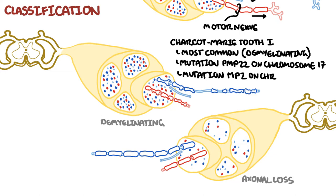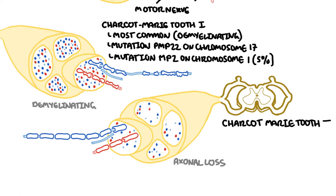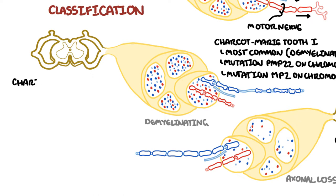Charcot-Marie-Tooth type 2 is the axonal subtype, where you have loss of axons — which means you essentially lose the neurons in the peripheral nerve — and this causes a reduction in the strength of the signals that are transmitted through the neurons.